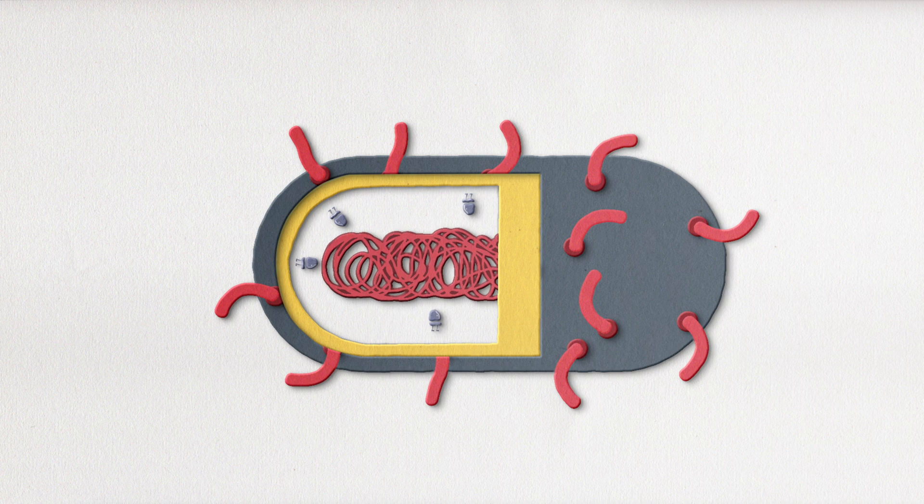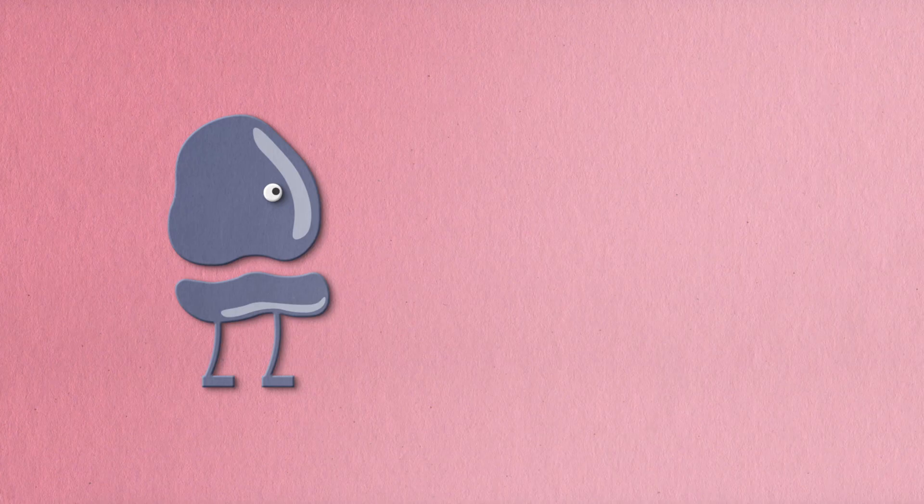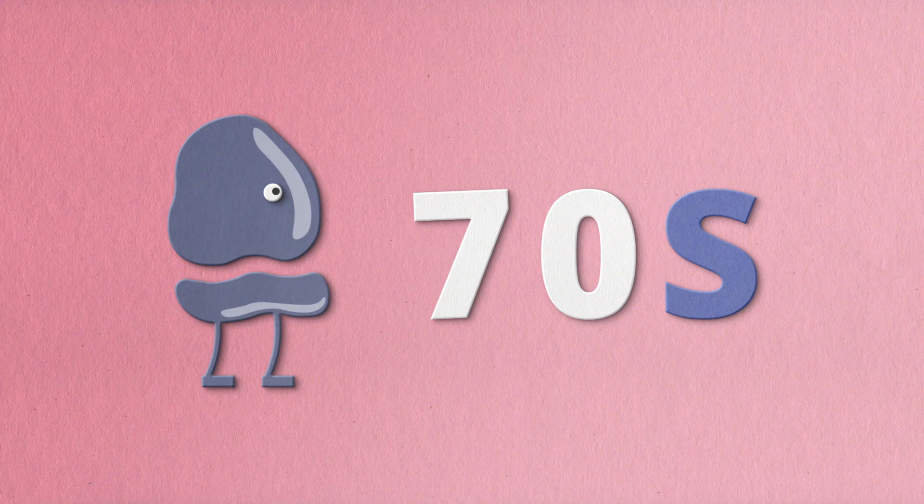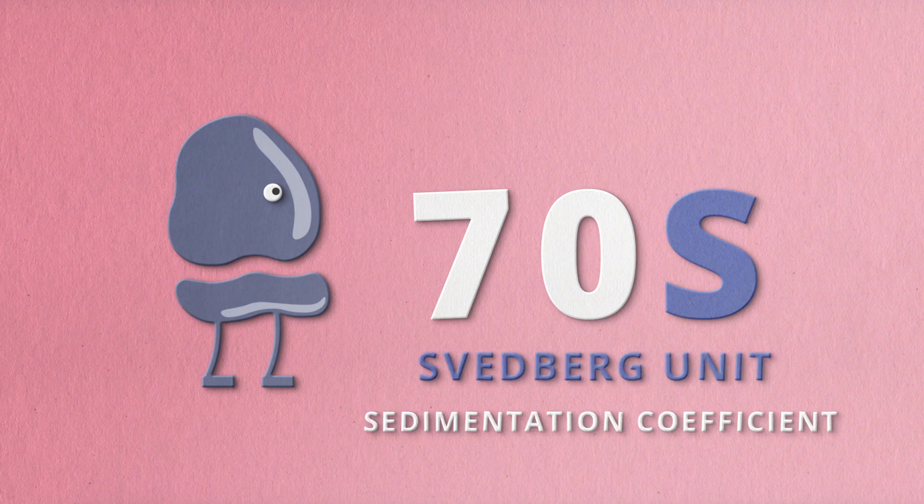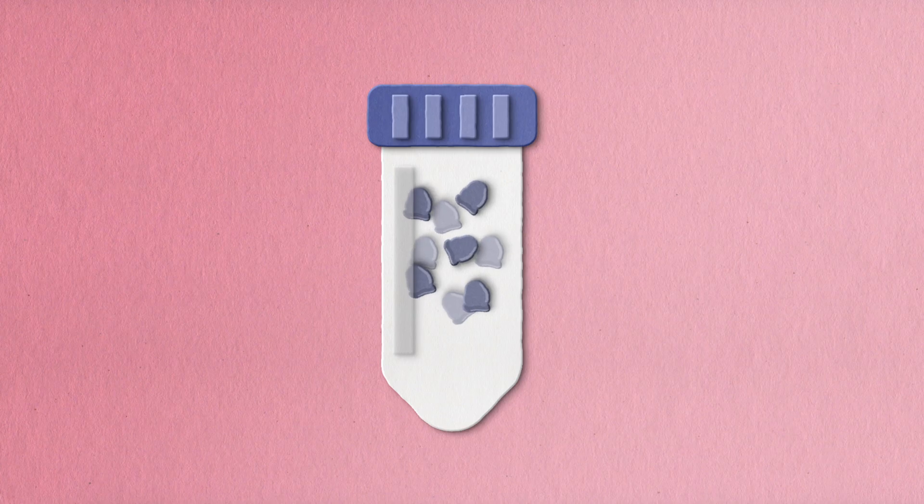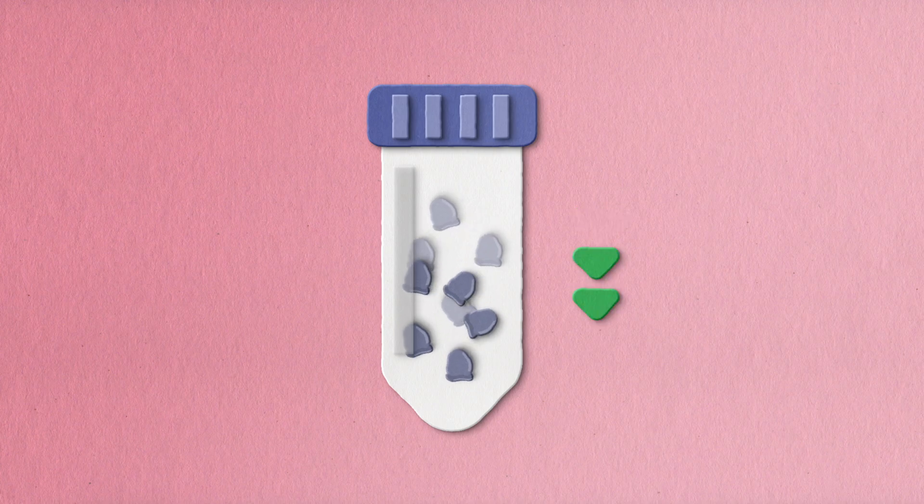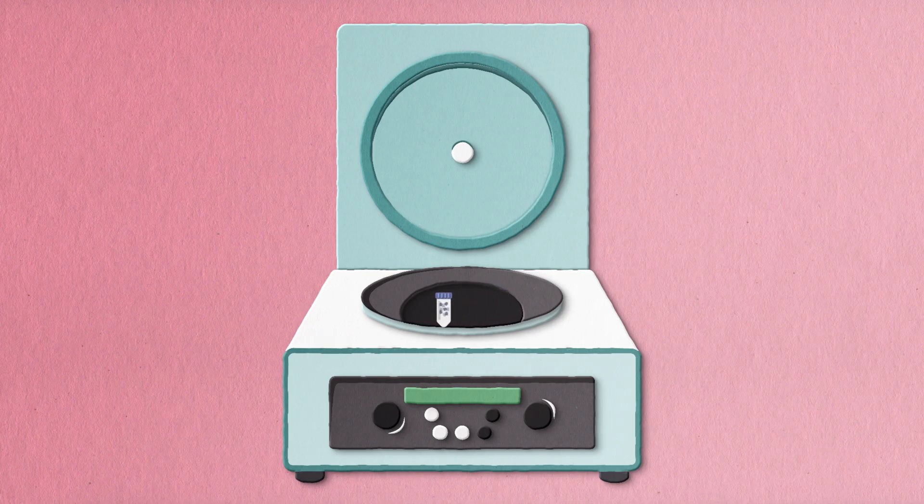The S refers to a Svedberg unit measuring sedimentation coefficient. For biological macromolecules and cell organelles like ribosomes, the sedimentation rate is typically measured as the rate of travel in a centrifuge tube subjected to high G-force.